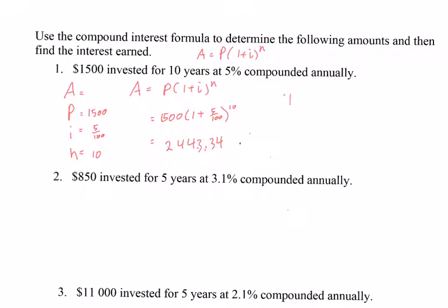Now to find the interest: interest equals the amount minus the present value, which is $2,443.34 minus $1,500. We end up with $943.34 for our interest earned.